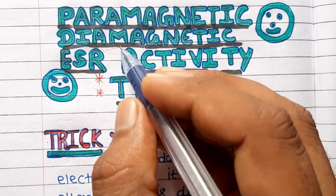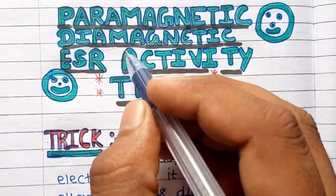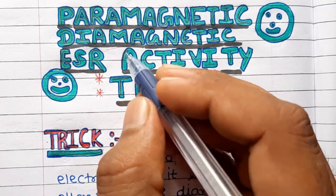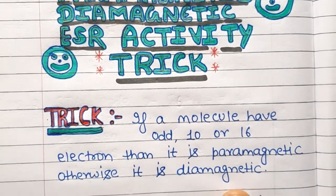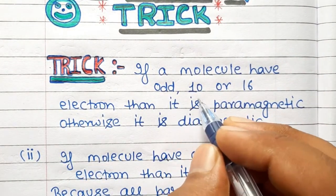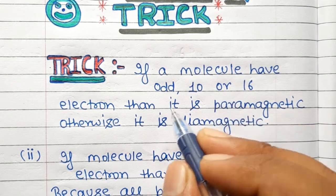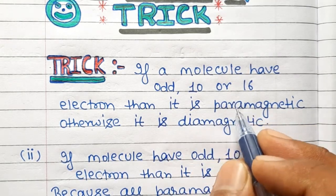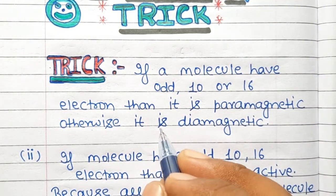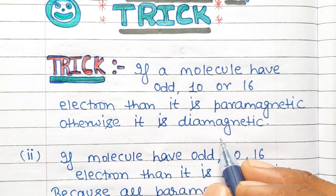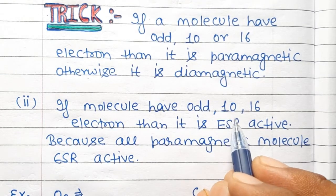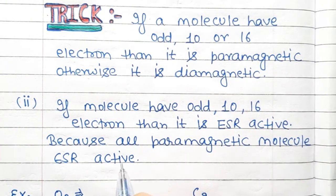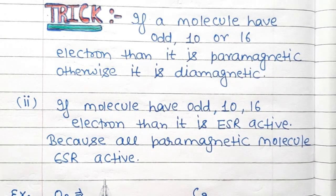My name is Gura Sharma and today I am going to discuss a sword trick with you. With the help of this trick you can easily find out if a given molecule is paramagnetic, diamagnetic, or ESR active. The trick is: if a molecule has an odd number of electrons, 10 or 16, then it will be paramagnetic in nature. If a given molecule has an even number of electrons, it will be diamagnetic. Also, if a molecule has 10 or 16 electrons, it will be ESR active, because all paramagnetic molecules are ESR active.